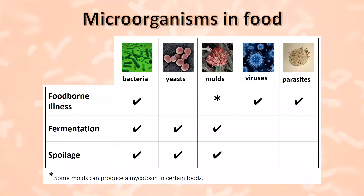Bacteria are the most important group of microorganisms to consider because they contribute significantly to food safety, food spoilage, and to fermentations. Molds and yeasts are often associated with spoilage and are also exploited for fermentations. There are some types of molds that produce mycotoxins that can cause foodborne illnesses; however, the growth of these molds is limited to cereal crops and tree nuts. Viruses and parasites cause foodborne illness but do not contribute to spoilage or fermentation because they do not have the ability to multiply in foods.